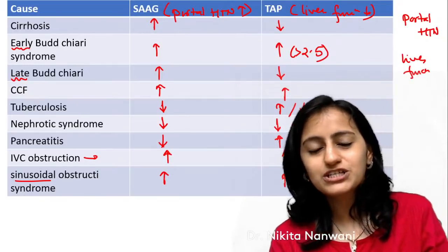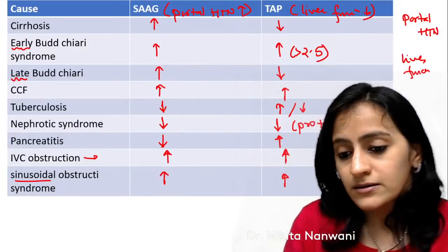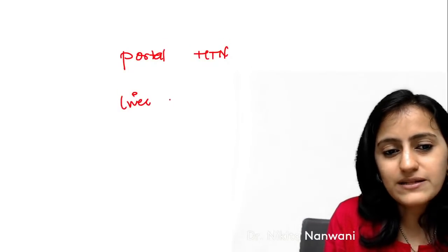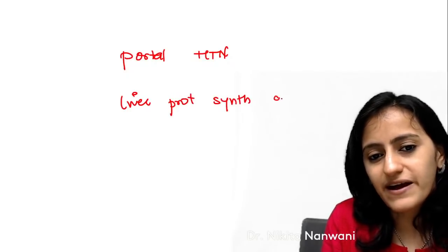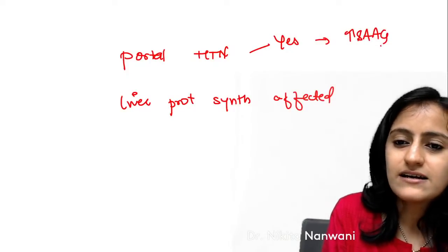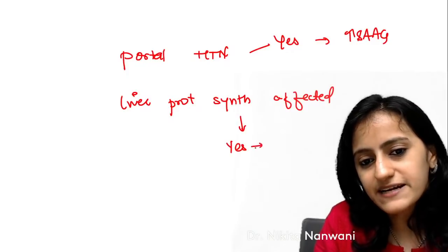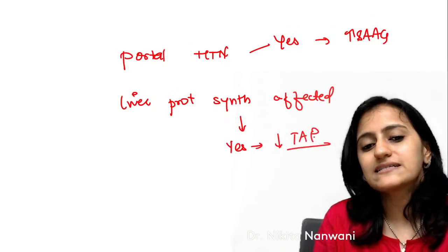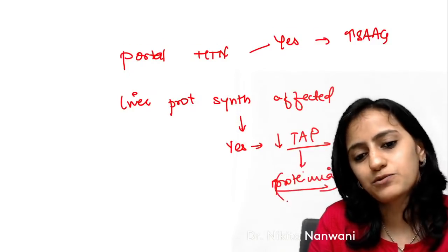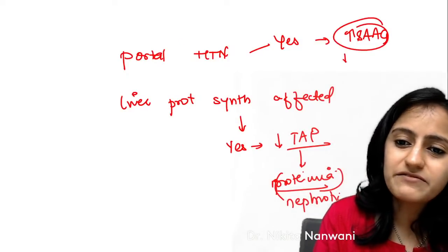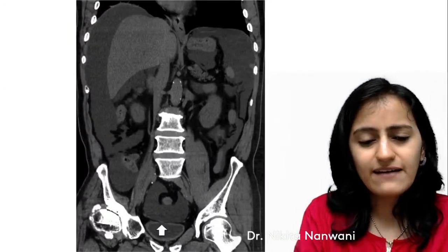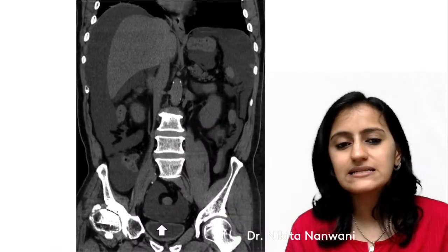So that's the session on SAAG. You only need to ask two questions: Is this a cause of portal hypertension? Is the liver protein synthesis affected? If portal hypertension — high SAAG; if not — low SAAG. If liver protein synthesis affected — low total ascitic protein; also low in proteinuria like nephrotic syndrome. High SAAG without portal hypertension is your urinary bladder rupture.